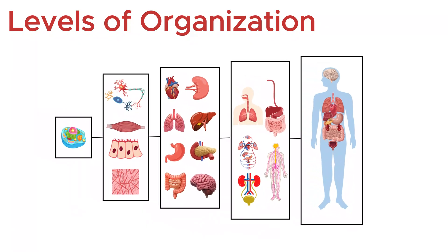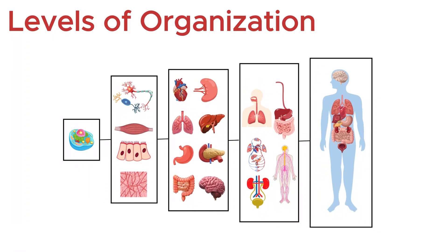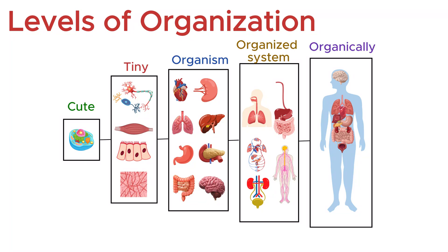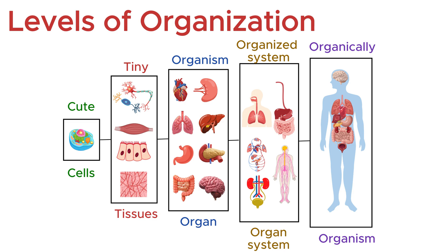And if you're looking for a quick way to remember the hierarchy, here's a simple mnemonic: 'Cued tiny organisms organize systems organically.' That's cells, tissues, organs, organ systems, and finally, the complete organism. This hierarchy is not just a diagram in a textbook — it is the very framework of life.